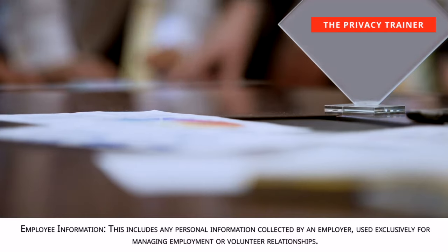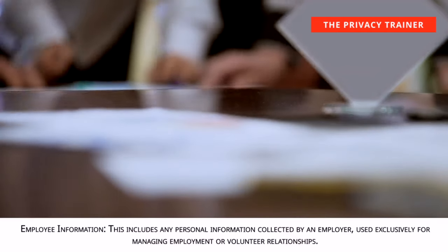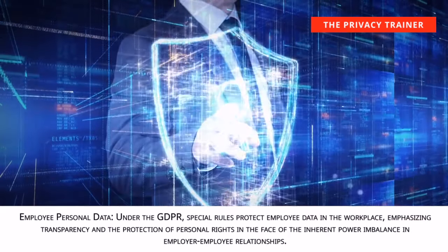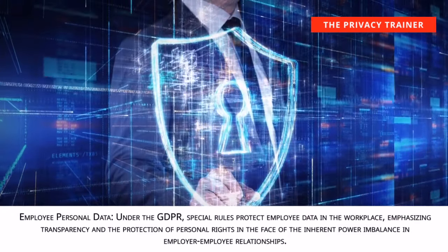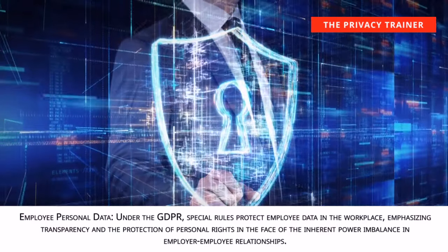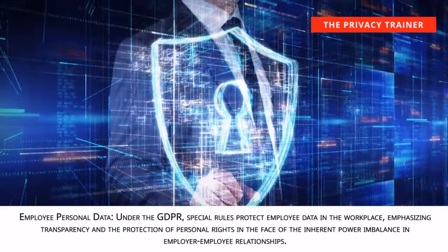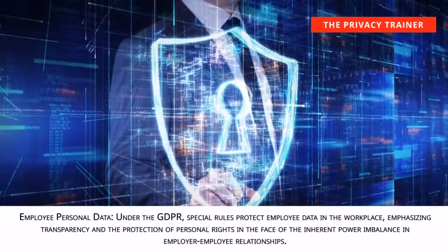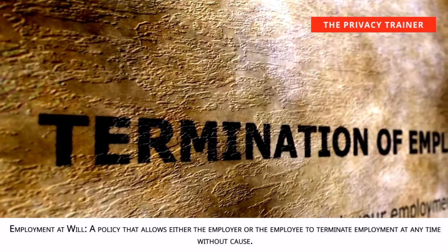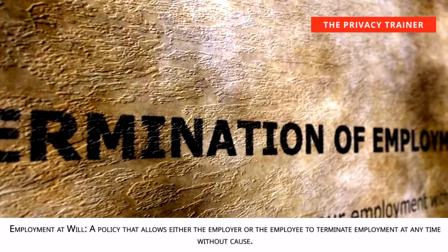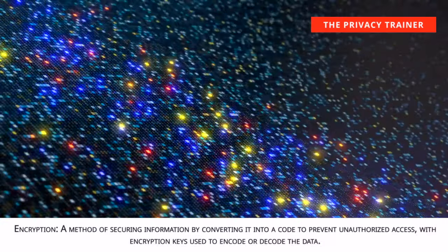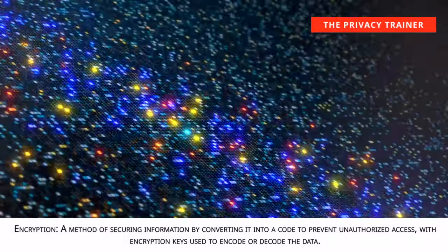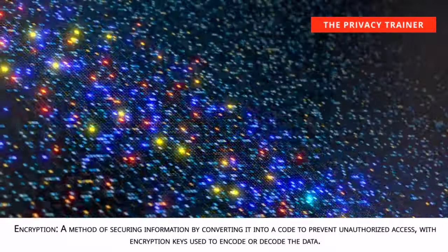Employee information. Includes any personal information collected by an employer, used exclusively for managing employment or volunteer relationships. Employee personal data. Under the GDPR, special rules protect employee data in the workplace, emphasizing transparency and the protection of personal rights in the face of the inherent power imbalance in employer-employee relationships. Employment at will. A policy that allows either the employer or the employee to terminate employment at any time without cause. Encryption. A method of securing information by converting it into a code to prevent unauthorized access, with encryption keys used to encode or decode the data.